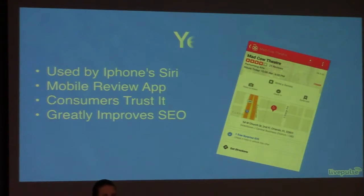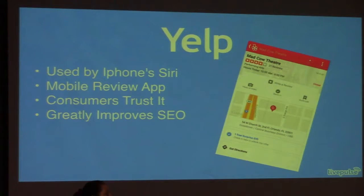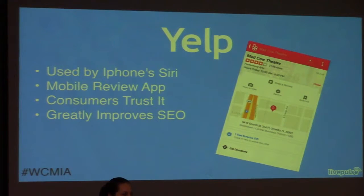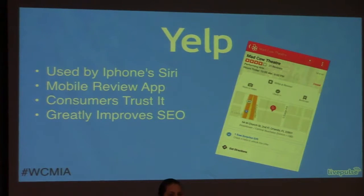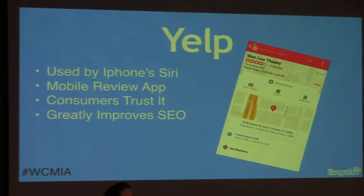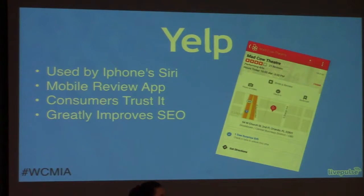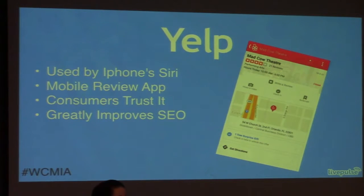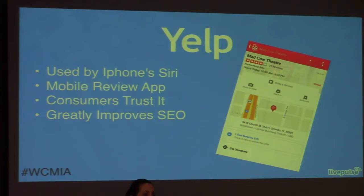The second most important of those four is Yelp. Yelp is important — how many people in the room have an iPhone? You all use Yelp and don't know it. When you ask Siri to help you find a restaurant or dry cleaners, that's Yelp — that's where Siri is pulling her data. We want to capitalize on that. It's also one of the most heavily used review apps on mobile. Consumers trust other consumers more than any advertisement they'll ever see on TV, so know that's definitely a place you need to pinpoint.